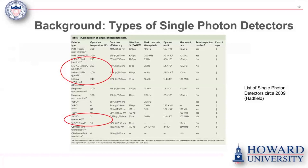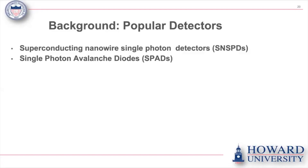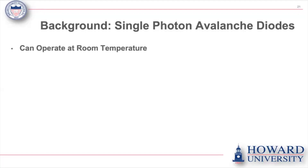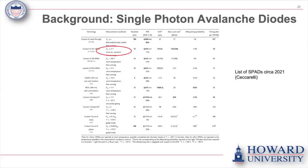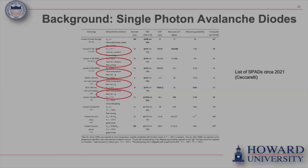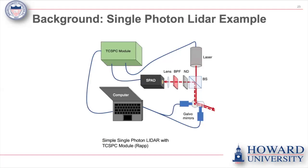Recent advancements in single photon avalanche diodes have shown that they can operate at room temperature, provide picosecond precision for photon arrival time, and the dominant architecture for SPADs is time-correlated single photon counting. Looking at the comparison — a 2009 paper versus a 2021 paper — we see very significant improvements enabling room temperature operation, which means we can now create a practical single photon LiDAR system.